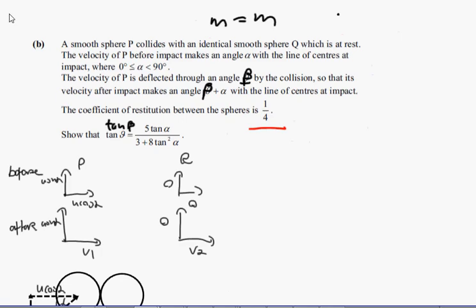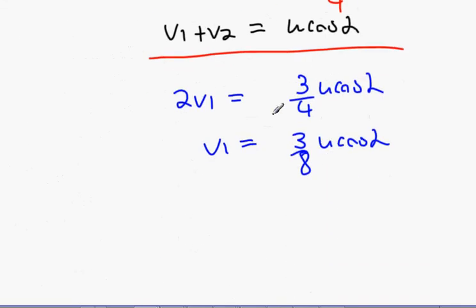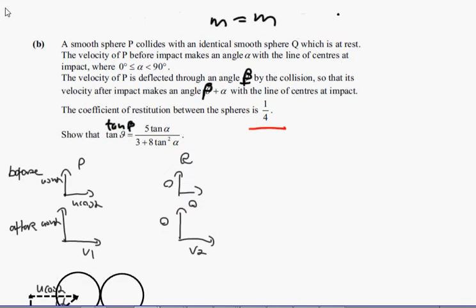The velocity P is deflected through an angle beta by the collision so that its velocity after impact makes an angle of alpha plus beta with the line of centers after impact. This is positive, so we know that it's moving diagonally up to the right. We know the J component and we know the I component. So it's three-eighths U cos alpha. This is going to be alpha plus beta, and then the top part is going to be U sin alpha.